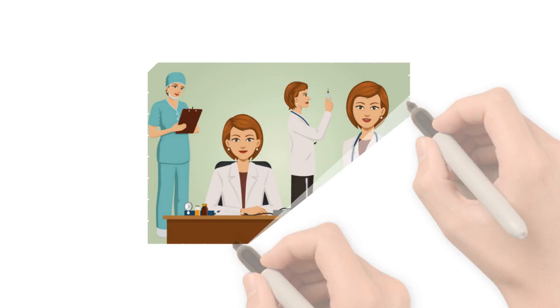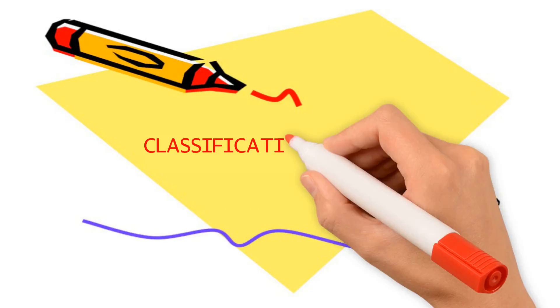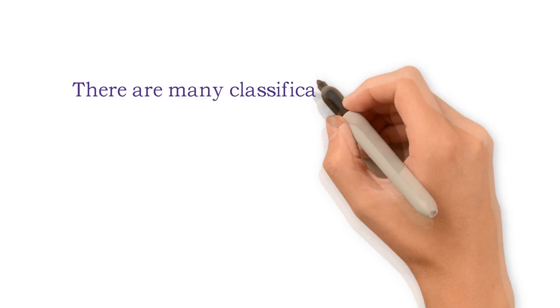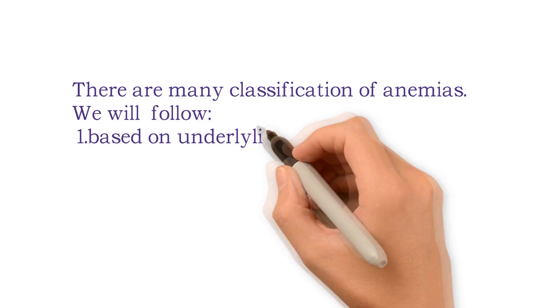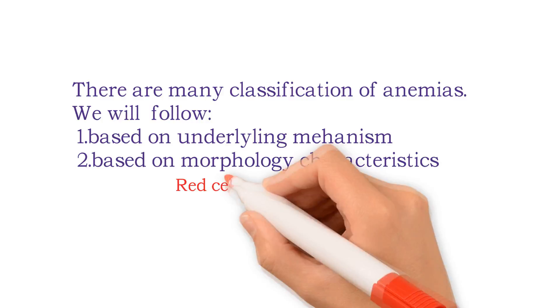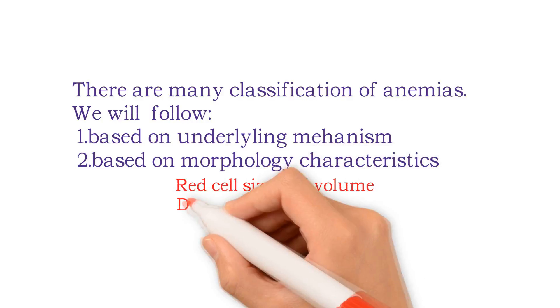From above, we know why classification of anemia is so important. Now let's talk about the classification of anemia. There are many classifications of anemia. We will follow based on underlying mechanism, based on morphology characteristics which include red cell size and volume, and degree of hemoglobinization.